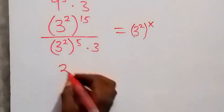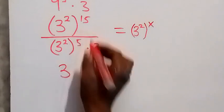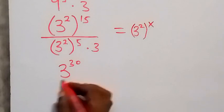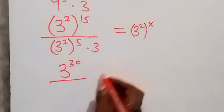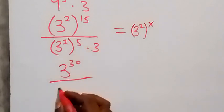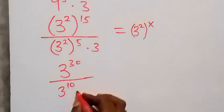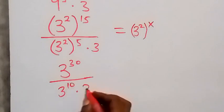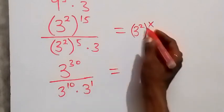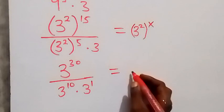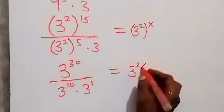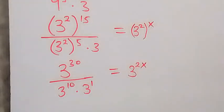So this will be equal to 3 raised to power 30, then divided by — from here 2 times 5 equals 10 — that's 3 raised to power 10, times 3 raised to power 1, which equals 3 raised to power 2x.